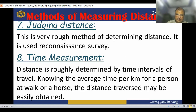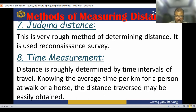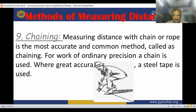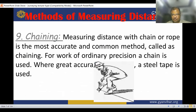Now, time measurement. Distance is roughly determined by the time interval of travel. Knowing the average time per kilometer for a person walking or a horse, the distance traversed may be easily obtained.